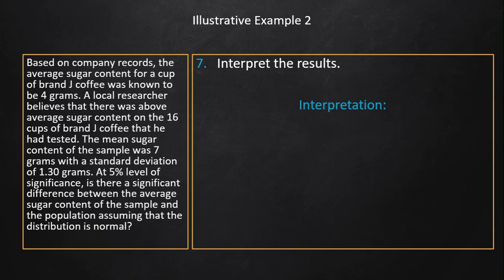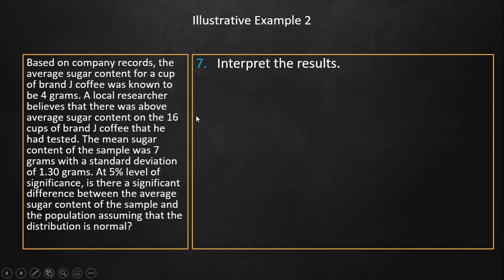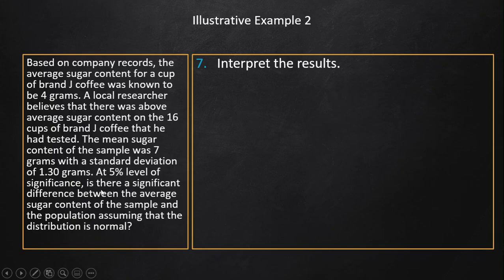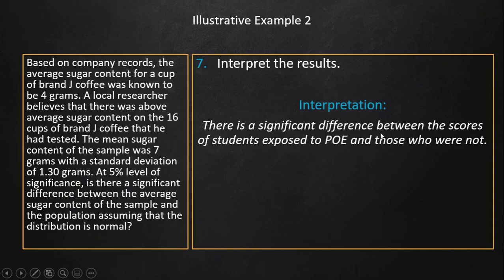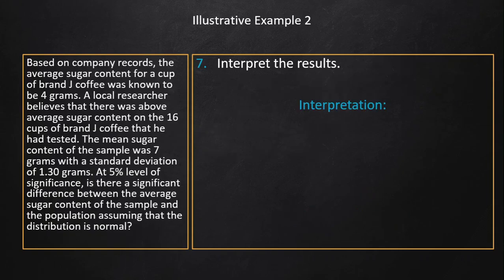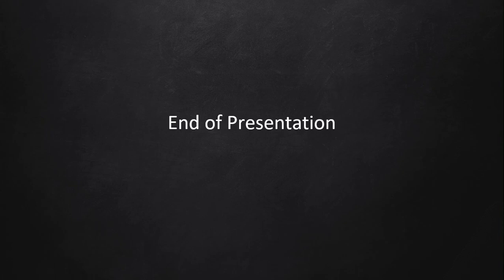The interpretation is that there is a significant difference between the scores of the two groups of senior high students. Note: please disregard any incorrect interpretation text on screen — that belonged to a previous example. This concludes the second to the last part of our discussion on hypothesis testing.